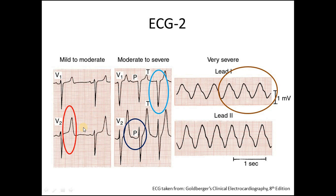In this second ECG, the red circle shows a tall tented T wave. The dark blue circle shows the flattening or absence of the P wave. The light blue circle shows a widening of the QRS complex. And the brown circle shows the sine wave pattern.